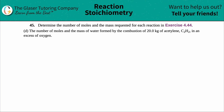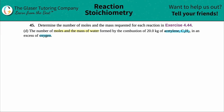Problem 45: determine the number of moles and the mass for each reaction in exercise 4.44, letter d. In this case we need to find the number of moles and the mass of water formed by the combustion of 20.0 kilograms of acetylene, which is C₂H₂, in an excess of oxygen. They gave you one piece of information for a certain compound — acetylene C₂H₂.